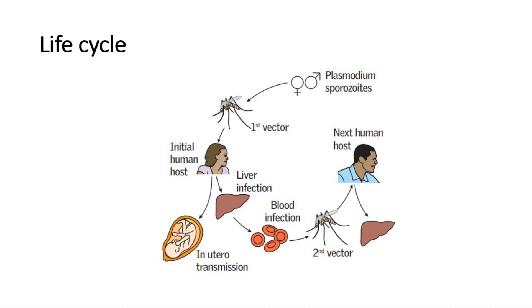The rupture of the schizonts releases merozoites, which enter red blood cells. In the red blood cell, merozoites form larger trophozoites and erythrocytic schizonts. When these erythrocytic schizonts rupture, they cause the clinical manifestations of malaria, where symptoms begin to appear.